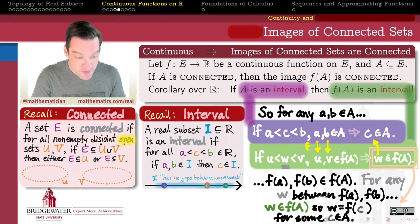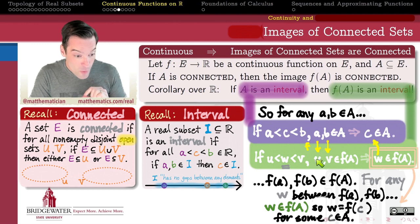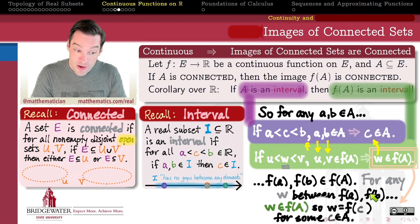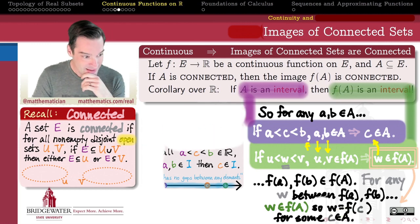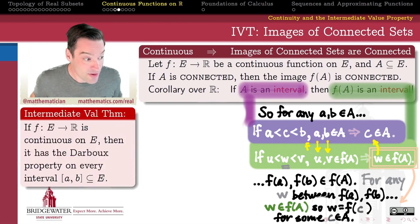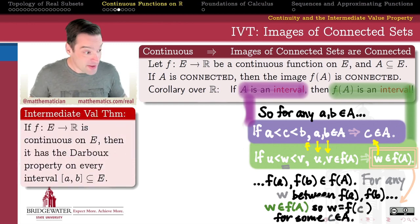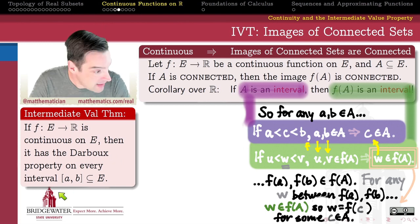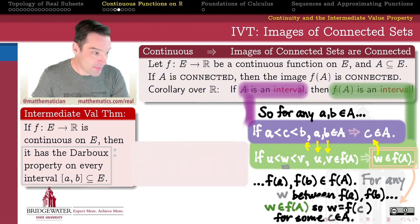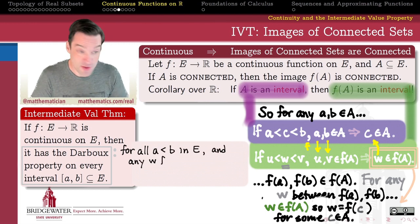So, reading what we have: if you give me an a and a b in the domain, and we pick any w between the y values f(a) and f(b), we will be able to find another x value c between a and b which realizes the y value w. This is the result which, in calculus, we call the Intermediate Value Theorem. The Intermediate Value Theorem says that for a continuous function on a set E, every continuous function has what we call the Darboux property on every closed interval [a, b] which is a subset of E.